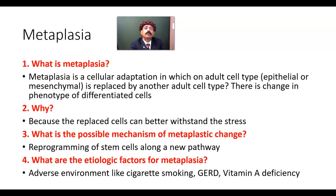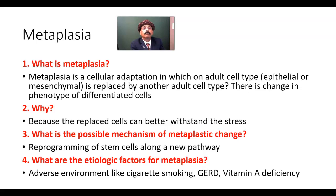What is Metaplasia? Metaplasia is a cellular adaptation in which one adult cell type — epithelial or mesenchymal — is replaced by another adult cell type. We have multiple types of epithelium like pseudo-stratified ciliated columnar epithelium, columnar epithelium, and stratified squamous epithelium. So one type of epithelium will be converted into another type of epithelium. This is a cellular adaptation due to adverse environment or excessive unfavorable stress.